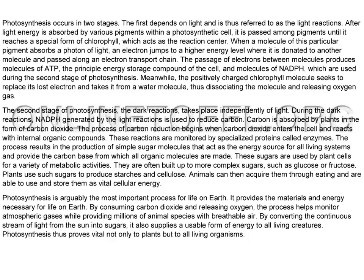The second stage of photosynthesis, the dark reactions, takes place independently of light. During the dark reactions, NADPH generated by the light reactions is used to reduce carbon. Carbon is absorbed by plants in the form of carbon dioxide. The process of carbon reduction begins when carbon dioxide enters the cell and reacts with internal organic compounds.